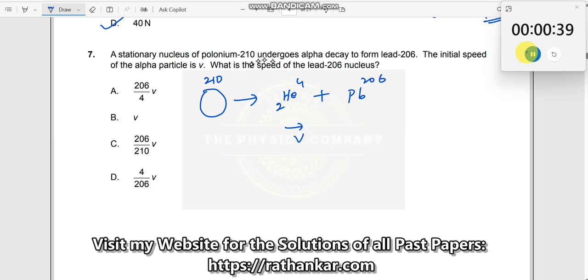So this is v over here. What is the speed of the lead-206 nucleus? Let the speed of this one be v dash. It can move forward, backward, whatever. Let me assume it is going like this. Actually it should go backwards.